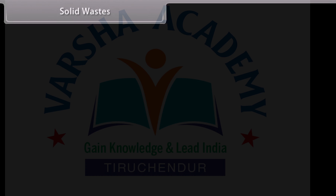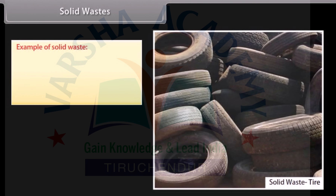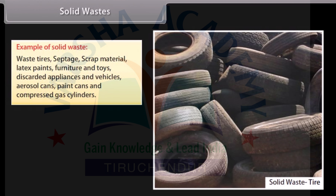Solid Wastes: Solid waste is any garbage, sludge from a wastewater treatment plant, and other discarded materials including solid, liquid, semi-solid, or contained gaseous materials. Examples of solid waste include waste tires, septage, scrap material, latex paints, furniture and toys, discarded appliances and vehicles, aerosol cans, paint cans, and compressed gas cylinders.